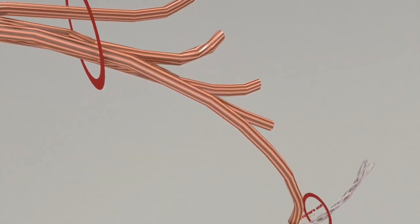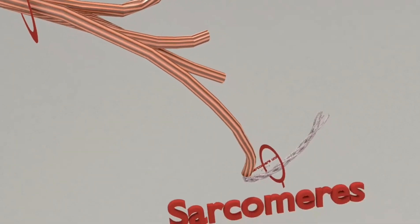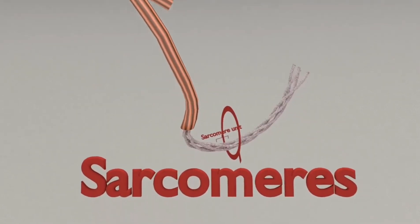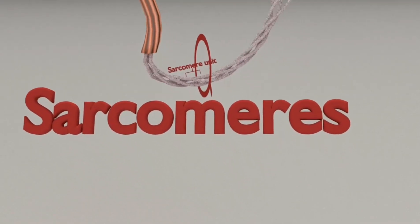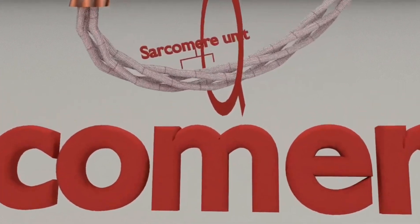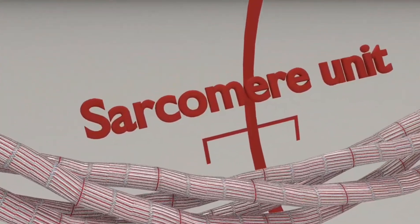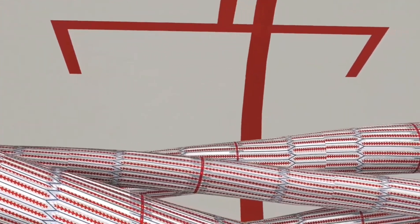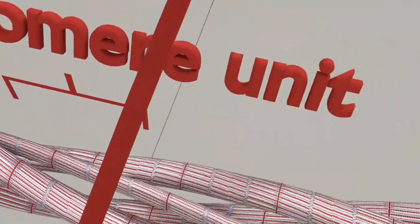The thick and thin filaments form partially overlapping layers that are laid out in repeated functional units called sarcomeres. The sarcomere is the basic functional contractile unit of the muscle fiber necessary for muscle contraction. It is defined as the region between two Z lines.